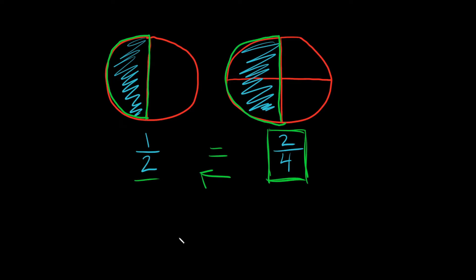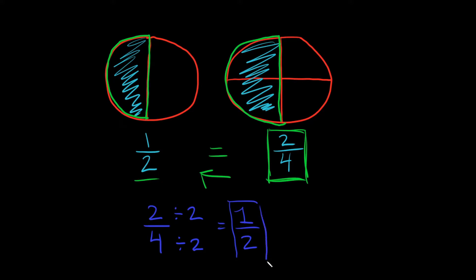So how do we get it from two fourths to one half? All you have to do is divide the top and bottom by the greatest common factor. That's just a fancy way of saying what's the biggest number that goes into both the numerator and the denominator evenly. So if we have two fourths, the biggest number that goes into both of these evenly is two. So we divide the top and the bottom by two. Two divided by two is one, four divided by two is two. So our fraction is reduced, and two is our GCF.